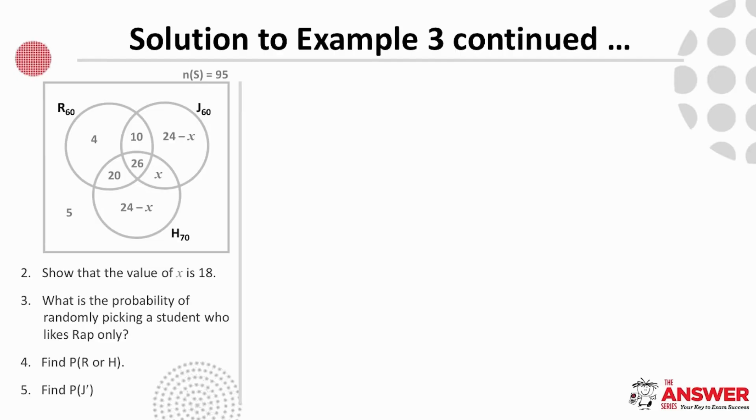Okay, now that our Venn diagram is complete, we can continue with the rest of the questions. Number two is asking us to show that the value of X is 18. Here we use the overall information given initially that 95 students took part in the poll. This gives us the number in our sample space, which means that if we add up each part of the Venn diagram, the total will be 95. So the number of students that like Rap is 60 plus 24 minus X plus X, which is just 24 plus 24 minus X plus 5. And this all equals 95. And this simplified gives us X equals 18.